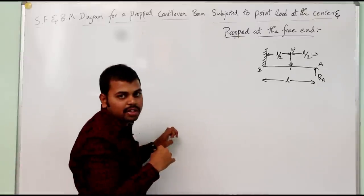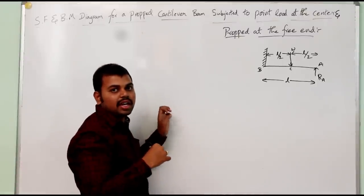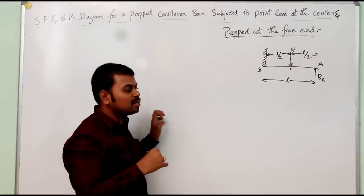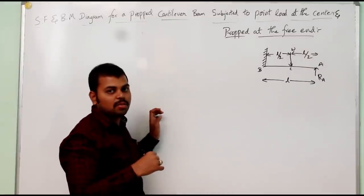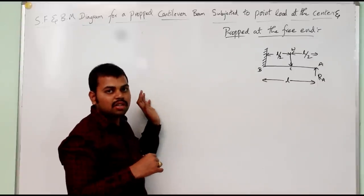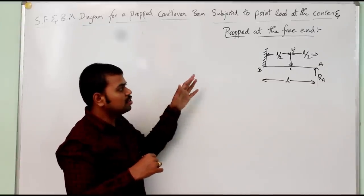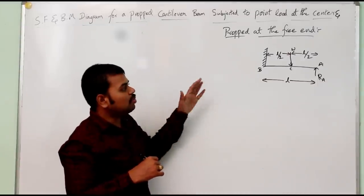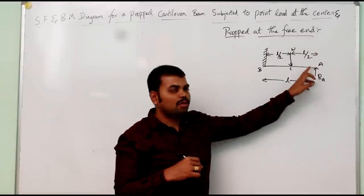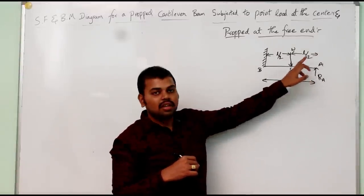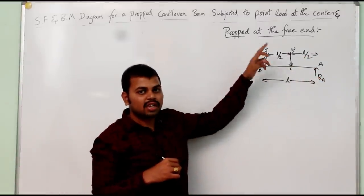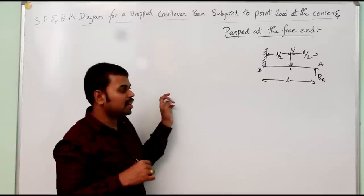We need to find the vertical reaction at support A, i.e., the prop reaction. To do this, we equate the downward deflection due to the applied loads to the upward deflection due to the prop reaction, treating the prop reaction as an upward load at the free end of the cantilever.